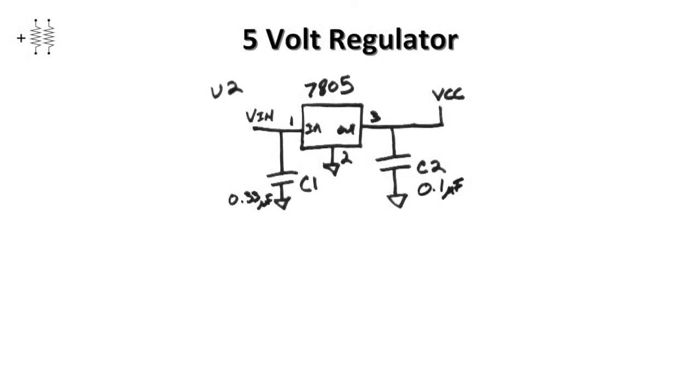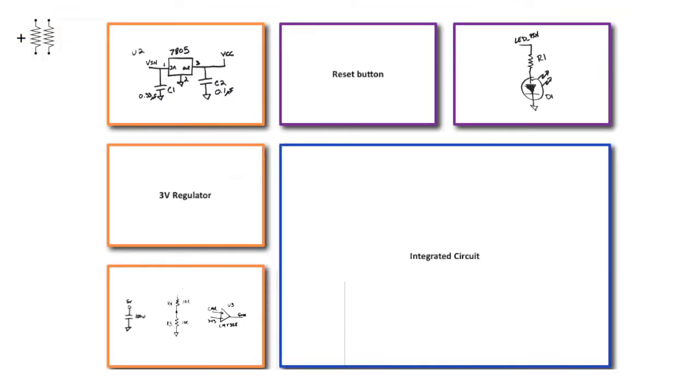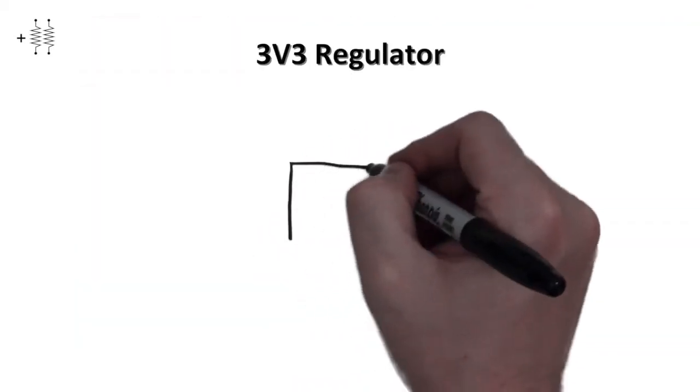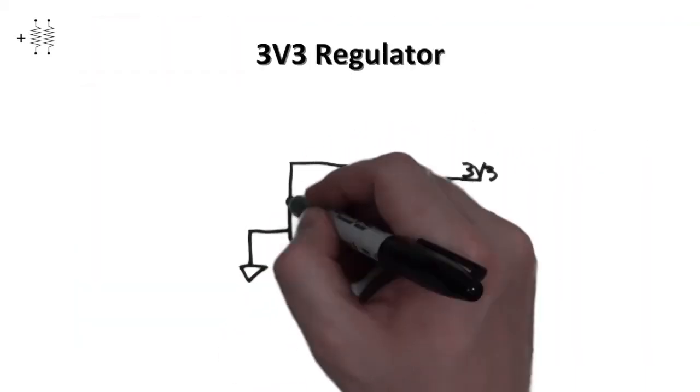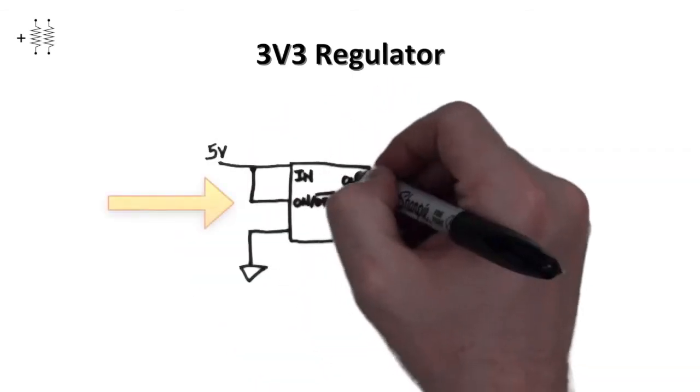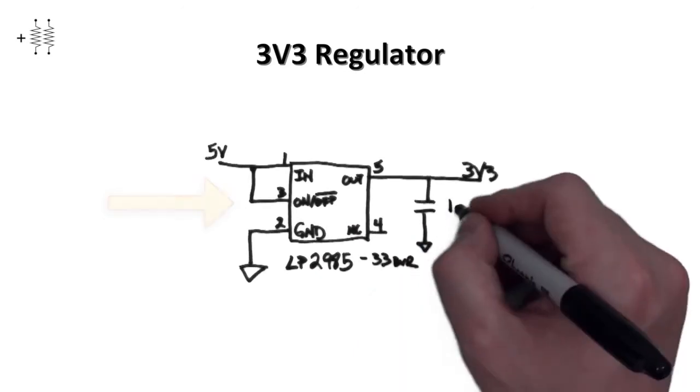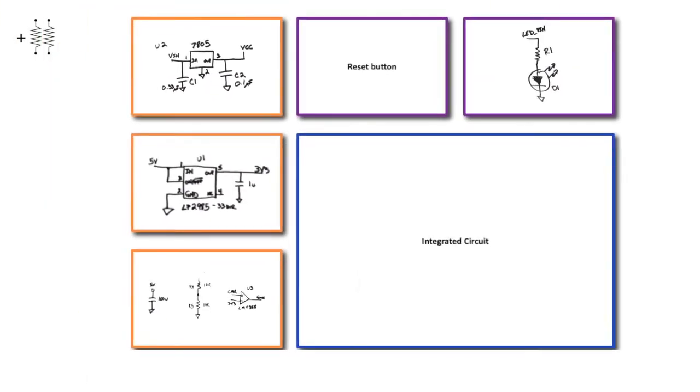Now the 7805 has been around for a very long time, and while it's very common, it's not the only linear regulator that you might see. So let's take a look at another one. This regulator outputs 3.3 volts while using the 5 volt rail as its input. The unique thing about this regulator is that it has an on-off which here is wired directly to 5 volts, which means this regulator is always on.